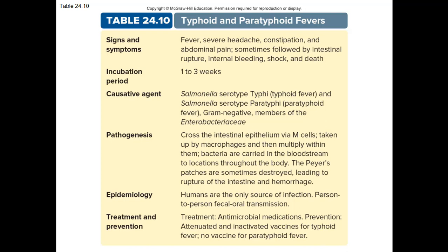Epidemiology: can spread person to person, fecal to oral, and via contaminated food or water. Treatment: most US strains are treated with fluoroquinolones. Some strains are multi-drug resistant. An attenuated live oral vaccine is available for typhoid, but not for paratyphoid fever. Asymptomatic carriers can have S. Typhi in their gallbladder — this strain can withstand the harsher pH inside the gallbladder, and they can keep shedding it in their feces for years. That's where you get situations like Typhoid Mary.